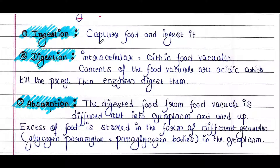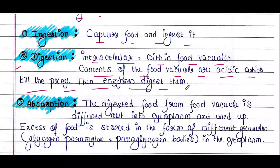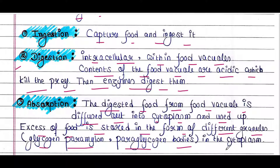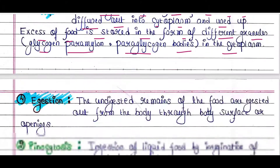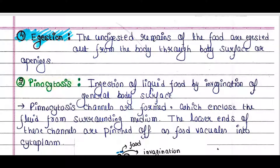To summarize holozoic nutrition: ingestion is the capture and ingest of food; digestion is intracellular, occurring inside the cell within food vacuoles, where acidic contents kill the prey and enzymes digest them; absorption is where digested food from the food vacuole diffuses into the cytoplasm and is used up, with excess food stored as granules such as glycogen, paramylon, and paraglycogen bodies.